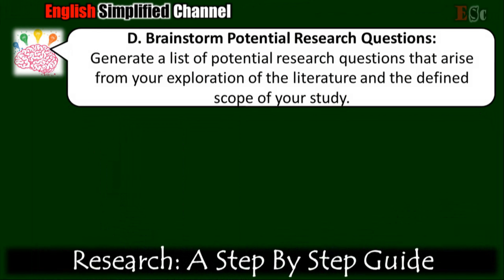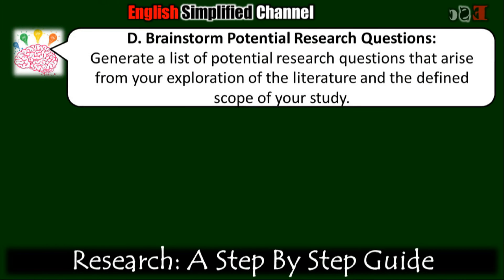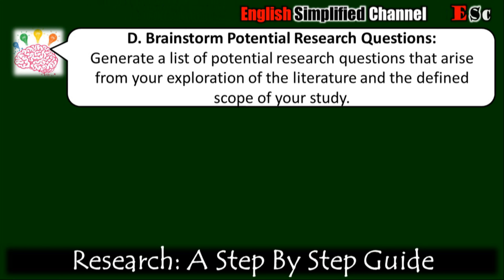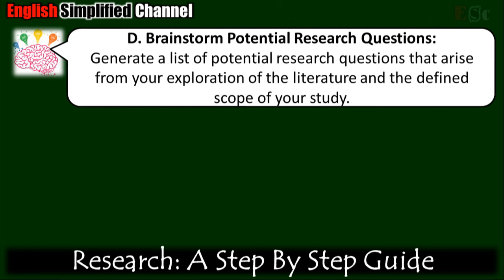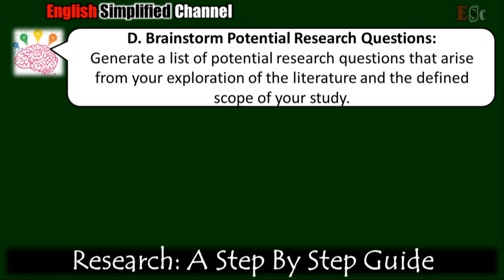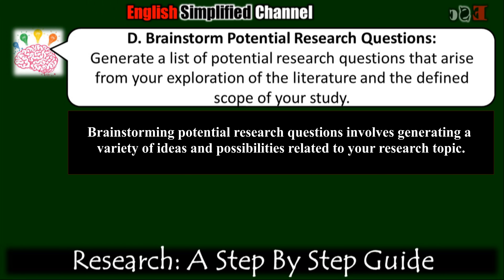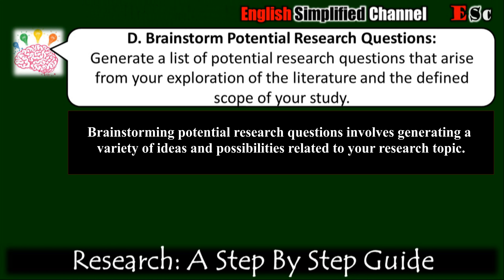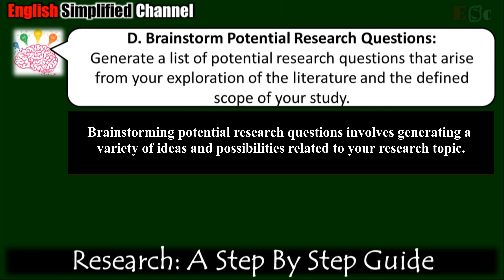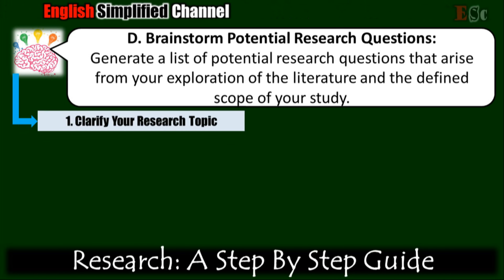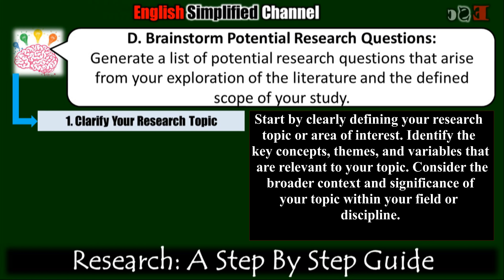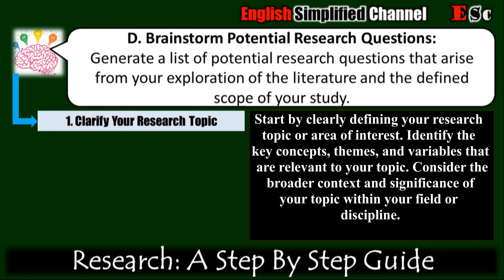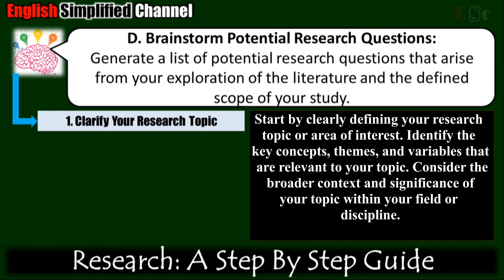Step d: Brainstorm potential research questions. Generate a list of potential research questions that arise from your exploration of the literature and the defined scope of your study. Consider different angles, perspectives, and approaches to framing your research question. Aim for questions that are specific, relevant, and feasible within the constraints of your research project. Brainstorming potential research questions involves generating a variety of ideas and possibilities. First, clarify your research topic. Start by clearly defining your research topic or area of interest. Identify the key concepts, themes, and variables that are relevant to your topic. Consider the broader context and significance of your topic within your field or discipline.